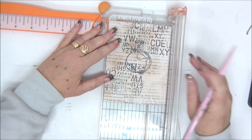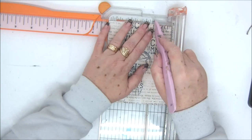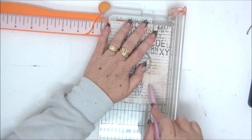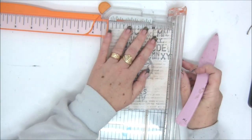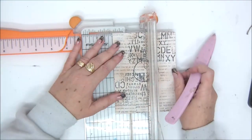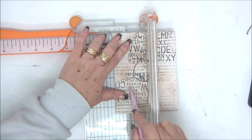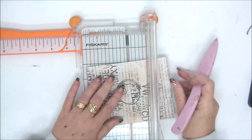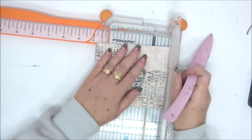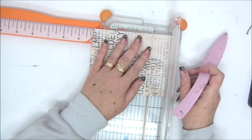So now let's score our paper on the short side. We're going to score it at one inch and three inches. This is on the short side, and like I said, one inch and three inches. And on the long side, we're going to score it at four inches and half an inch.